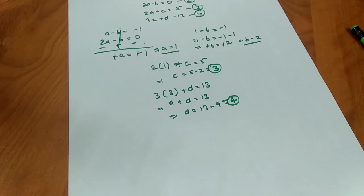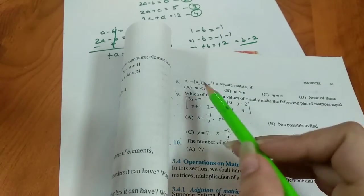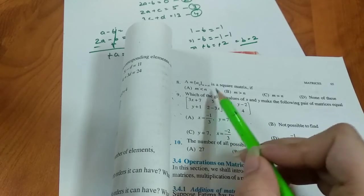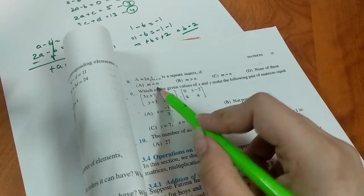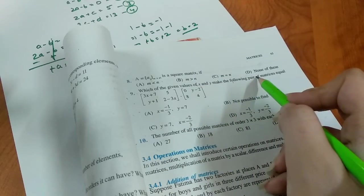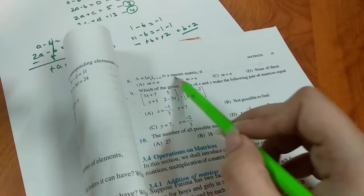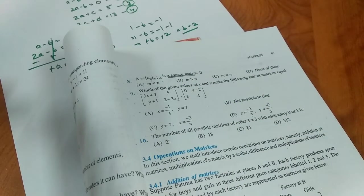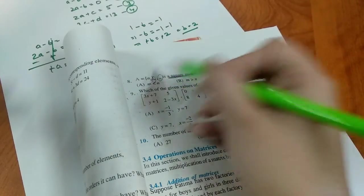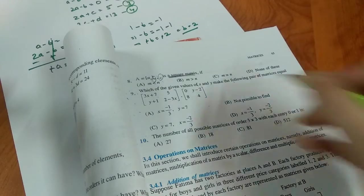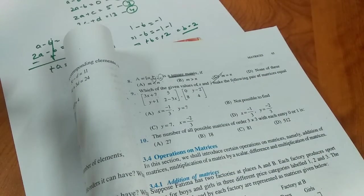Now let's look at question number 8. We have a matrix A of order m×n and we are told it is a square matrix. We need to determine whether m < n, m > n, m = n, or none of these. We need to remember the definition: a square matrix is one in which the number of rows and number of columns are equal, where m represents rows and n represents columns. So option C, m = n, is correct.